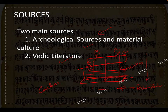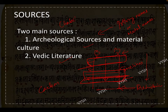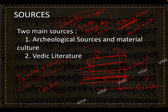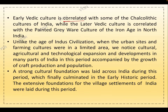The material culture is given names based on pottery or metals. For example, the Chalcolithic period is related to the usage of copper, and we also have the Iron Age and Bronze Age — all named after the metals being used. Pottery names like Painted Greyware are also used. Early Vedic culture is correlated with some Chalcolithic cultures of India, while later Vedic culture is correlated with the Painted Greyware culture.